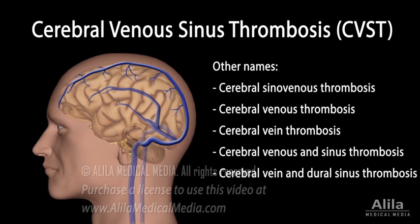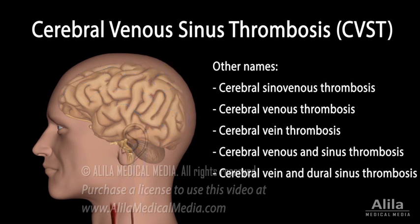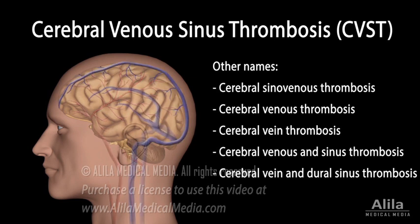Cerebral venous sinus thrombosis, CVST, occurs when a blood clot forms and blocks a vein in the brain. Blood is transported to the brain in arteries. After delivering oxygen and nutrients, it leaves in veins.